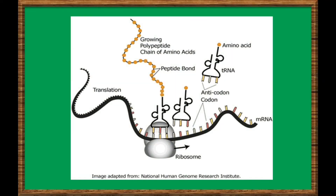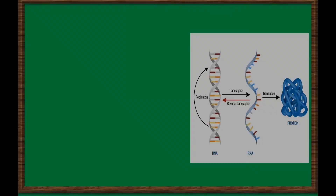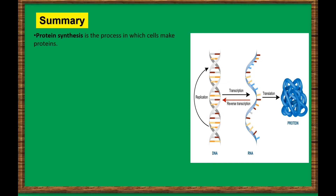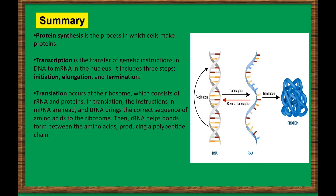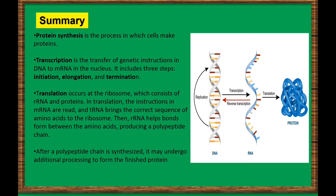After protein synthesis, a polypeptide chain is synthesized. It may undergo additional processing to form the finished protein. To summarize: protein synthesis is the process in which cells make proteins. Transcription is the transfer of genetic instructions in DNA to mRNA in the nucleus, and it includes three steps: initiation, elongation, and termination. Translation occurs at the ribosome, which consists of rRNA and proteins. In translation, the instructions in mRNA are read, and tRNA brings the correct sequence of amino acids to the ribosome. Then rRNA helps bonds form between the amino acids, producing a polypeptide chain, which may undergo additional processing to form the finished protein and be delivered to different parts of the body.